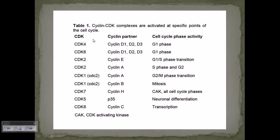Looking at the most important CDKs and their cyclin partners: CDK4 and CDK6 partner with Cyclin D (D1, D2, D3) and are mostly active during the G1 phase of the cell cycle. Following that, CDK2 partners with Cyclin E, and this complex becomes active at the G1-to-S phase transition, making Cyclin E and CDK2 really important during the G1/S transition.